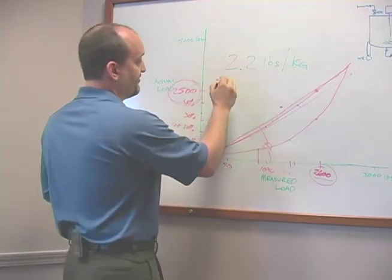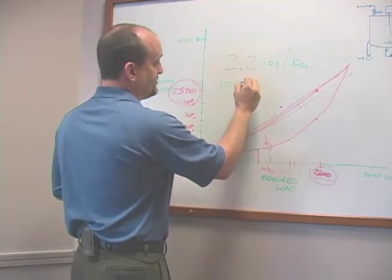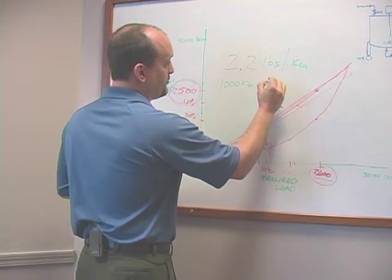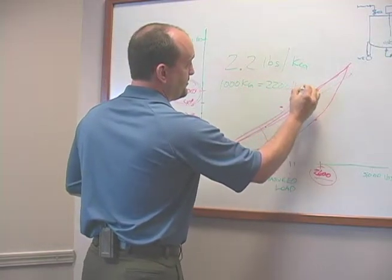So if you have 1,000 kilograms, that equals 2,200 pounds.